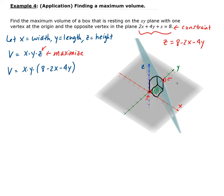So the volume is going to be x times y times (8 − 2x − 4y). Simplifying this, we get 8xy − 2x²y − 4xy². Now we have the volume in terms of x and y.